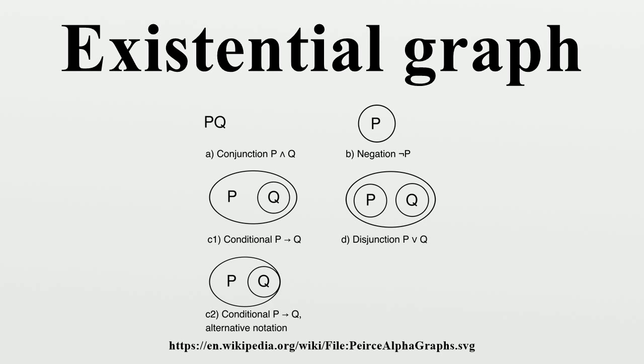Peirce's first published paper on graphical logic proposed a system dual to the alpha existential graphs, called the entitative graphs. He very soon abandoned this formalism in favor of the existential graphs.